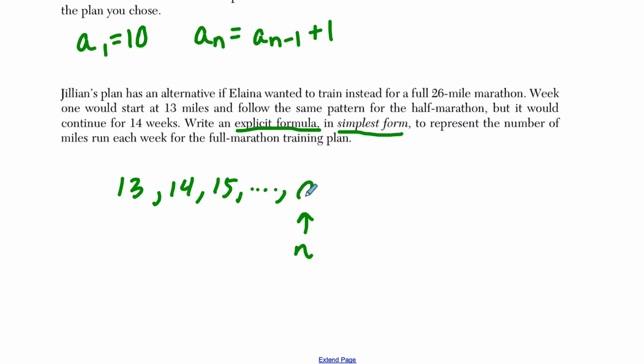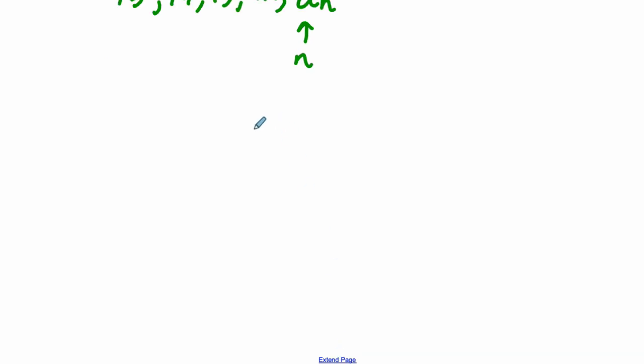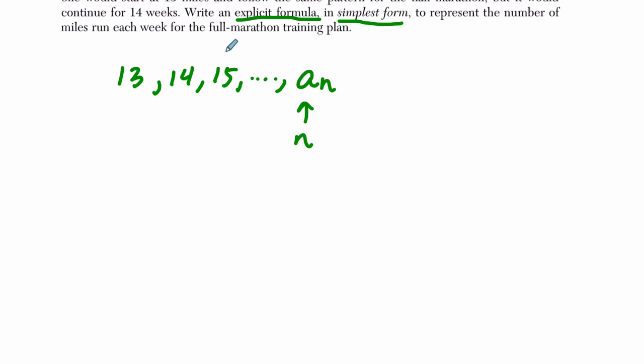But they didn't specify the variable here. So you can probably call it anything you want, but I would stick with the standard here. So what is the value of the miles she will run given any week? And we know it's up to 26 weeks, but we don't have to really worry about that. We don't have to specify that n has to be less than or equal to 26, but we can add that to our equation if we'd like.